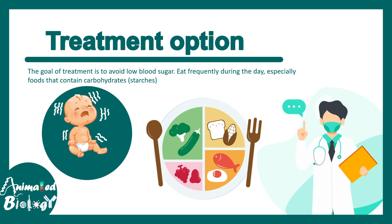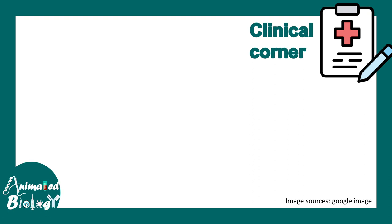The treatment options include dietary modifications and supportive care. It must be ensured that babies are not undergoing fasting for a very long time — they should be eating properly and frequently. Their meals should contain a substantial amount of carbohydrate, which is useful for energy generation.